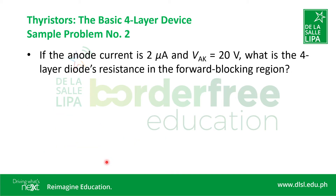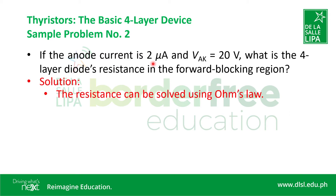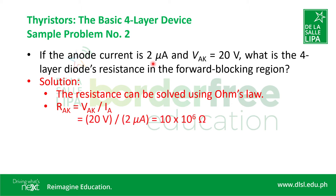For the next problem, this is just similar to problem number one. The only difference is that the anode current is changed to 2 microamperes; the rest is the same. Applying the same solution using Ohm's law, where resistance equals voltage over current and substituting the given values, we arrive at the correct answer of 10 megaohms.